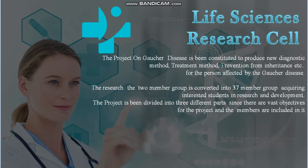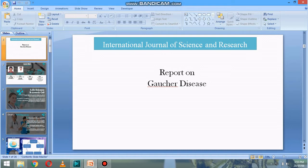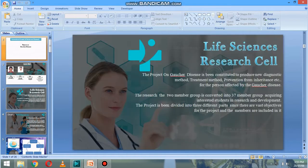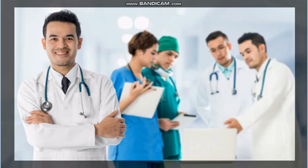The project on Gaucher disease has been constituted to produce new diagnostic methods, treatment methods, and prevention from inheritance for persons affected by Gaucher disease. The two-member group has been converted into a 37-member group, acquiring interested students in research and development. The project has been divided into three different parts due to its vast objectives.